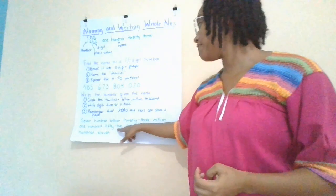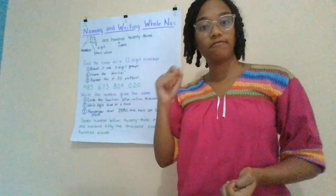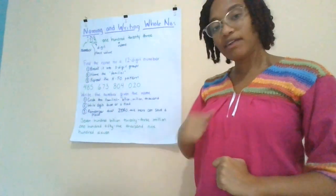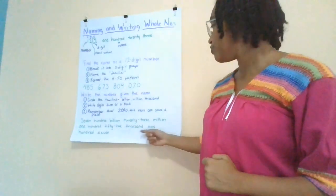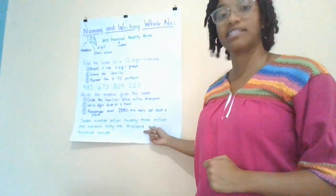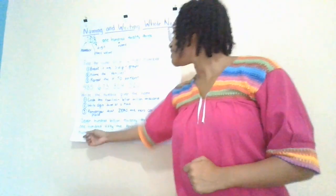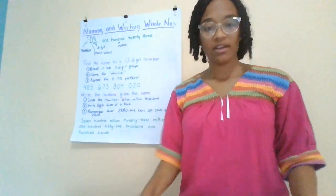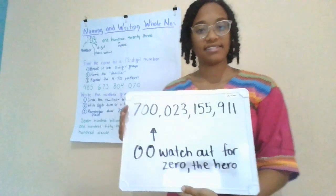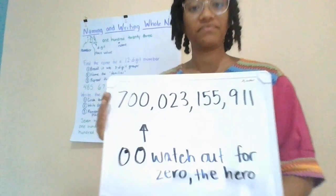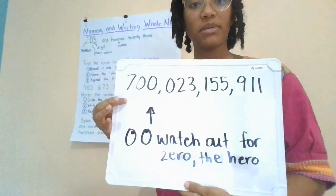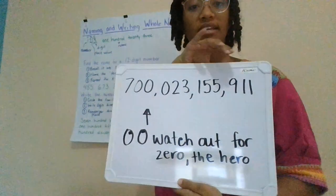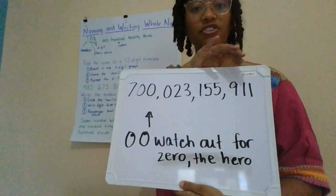Next, 155,000 — I'll write one, five, five for 155. And as I make a comma or a space, I'll move on to my last hundreds, tens, ones pattern. 911. So 911. That number looks like this: 700 billion, 23 million, 155,911.